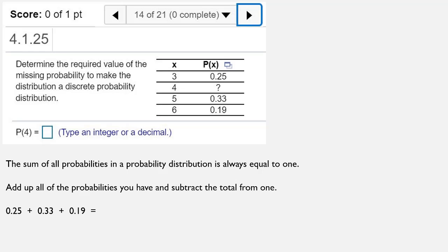So we take the 0.25, the 0.33, and the 0.19. And when we add those up, we end up with 0.77. If we subtract 0.77 from 1, we get 0.23. And that's going to be the value of the probability of 4. So the probability of 4 is 0.23.